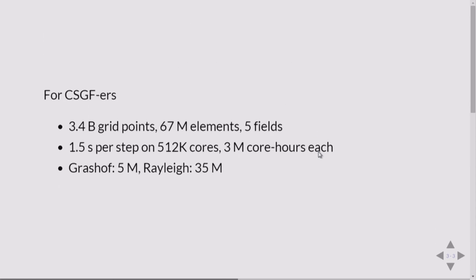For CSGF-ers, the resulting calculation had 3.4 billion grid points, or 67 million elements, which is the most spectral elements that have ever been used with this code, with five fields. So five times 3.4, you can get up to 30 billion degrees of freedom. On two-thirds of the MIRA supercomputer, our simulation took 1.5 seconds per time step.